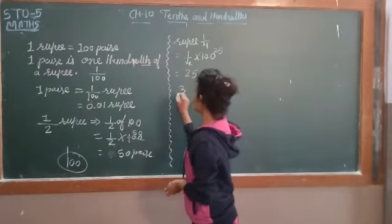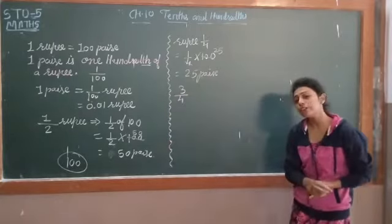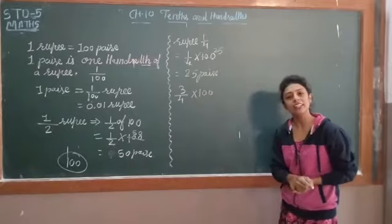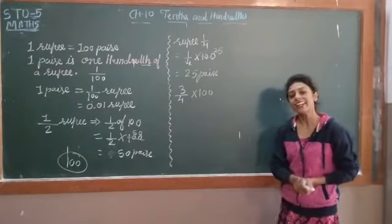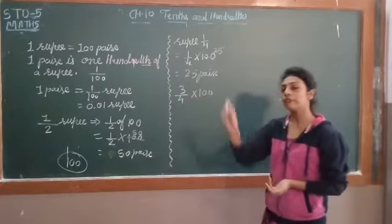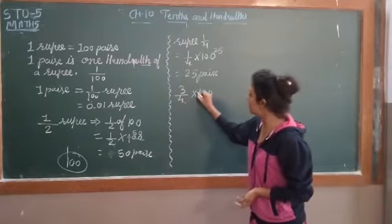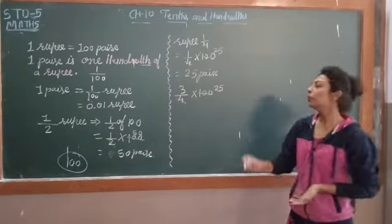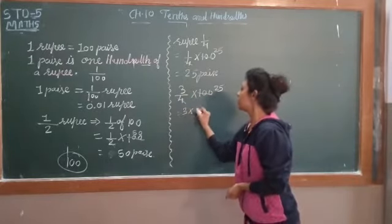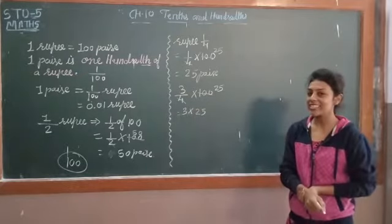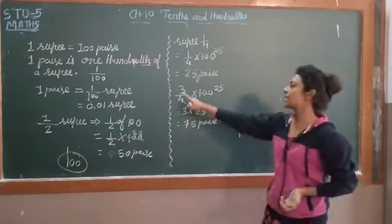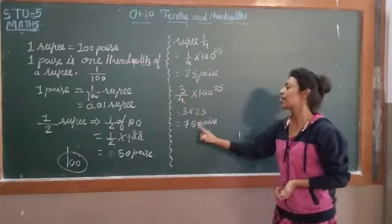Now we can see 3/4th. 3/4th of 100. So 3/4th of 100: we can write 3/4 multiplied by 100. 25 plus 25 plus 25 equals 75. So 3/4th of 100 is equal to 75 paise.